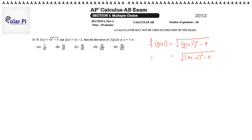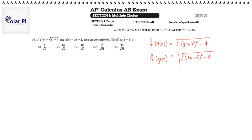And now, since this is f of g of x, you could just use chain rule to find the derivative of this and plug in 3, and you're done. So that's one way to approach it.